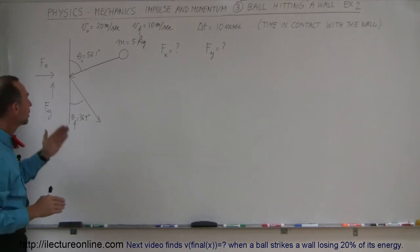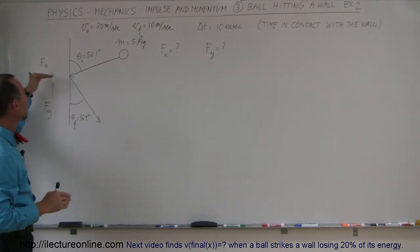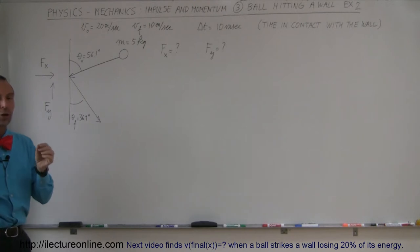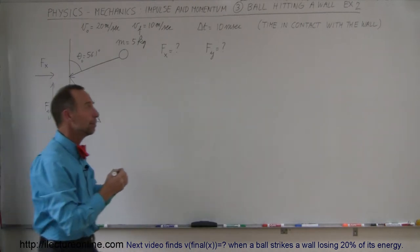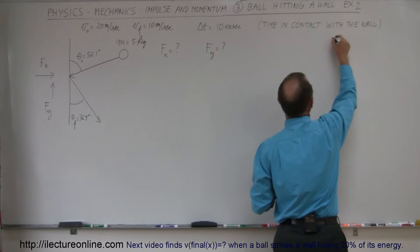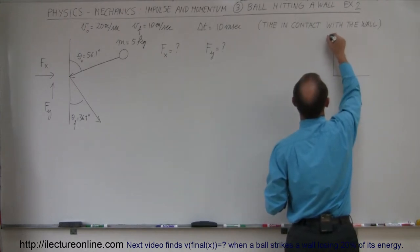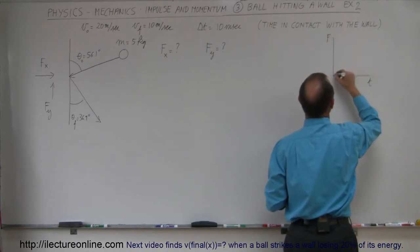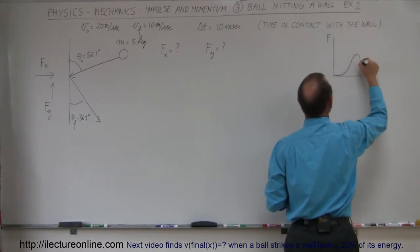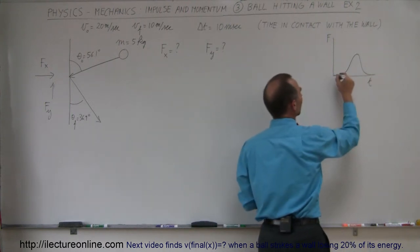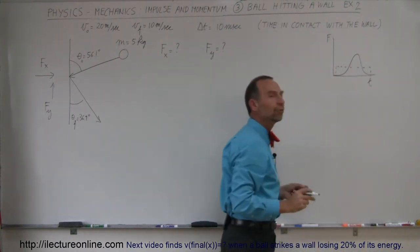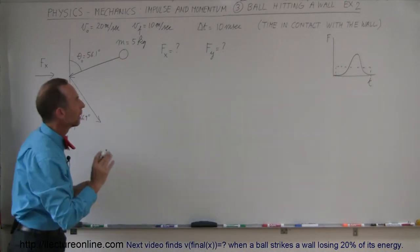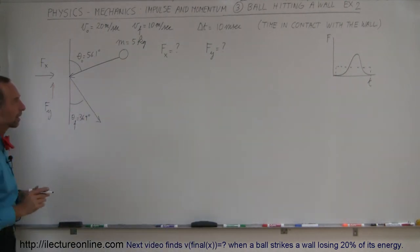So what is the force between the ball and the wall in the x direction? What is the force between the ball and the wall in the y direction during the impact? Remember that the impulse is force times time. In real life the impulse curve looks like a peak, but we're going to approximate it by taking the average value of the force during the impact, and the impact lasts for 10 milliseconds.